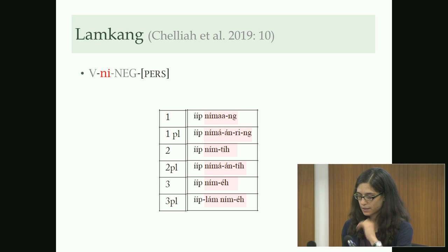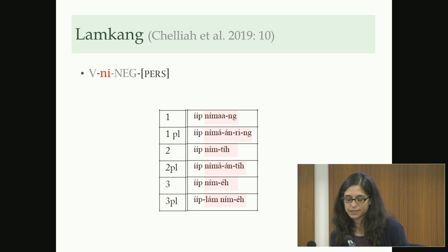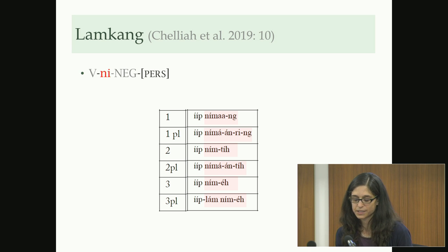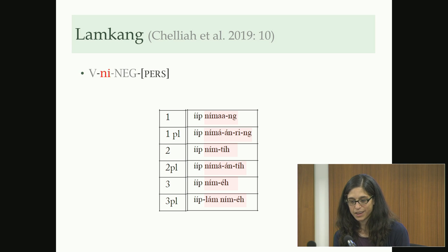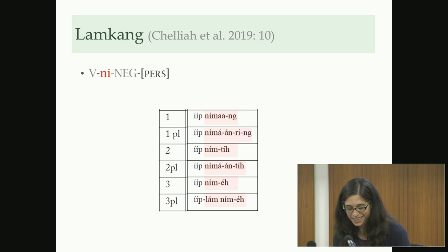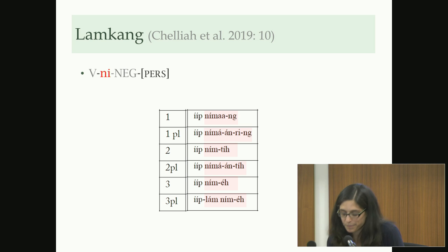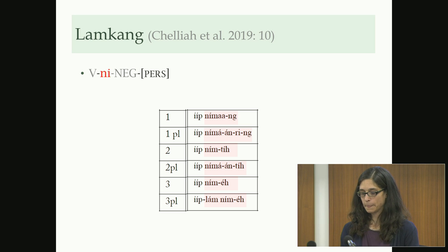Here is also an example from Biate that again looks the same. In Lamkang, however, the position of the negative and the knee is switched — but otherwise it's the same pattern. I don't know exactly what the mechanism for Lamkang is, how it switched — the obvious explanation would be analogy to other types of conjugations, but I'm not exactly sure.